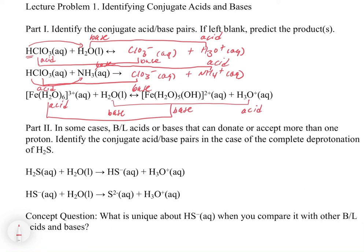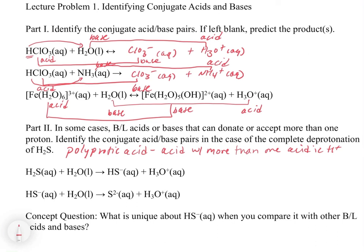There's one other concept to review from chapter 4: polyprotic acids. An acid with more than one acidic proton is called polyprotic. In this case, we identify the conjugate acid pairs for the complete deprotonation of H2S. H2S has two protons that come off in a stepwise fashion. First deprotonation: a proton is transferred to water, making H3O+ and HS-. Then HS- reacts with a second water molecule to make S2- and H3O+.